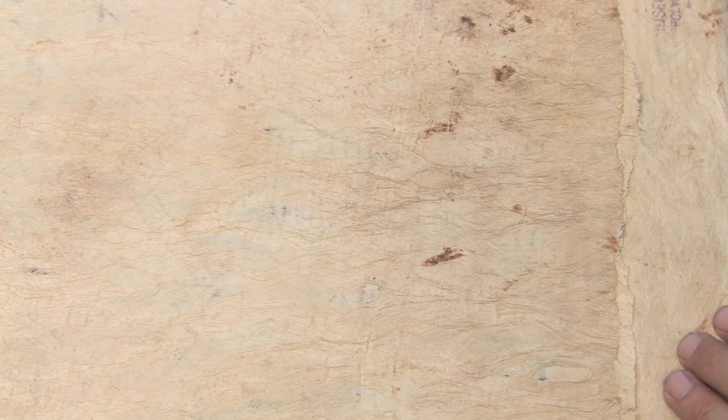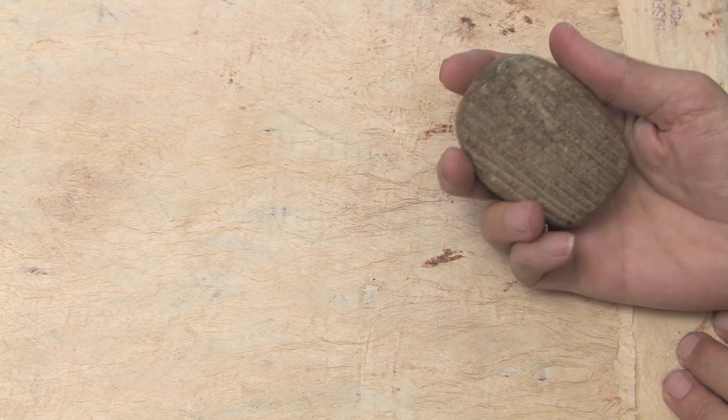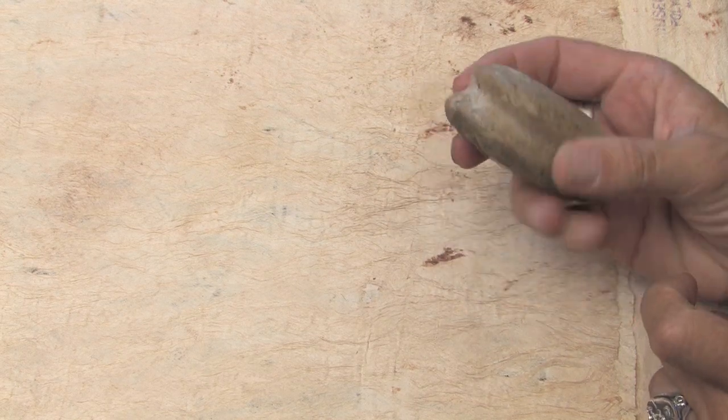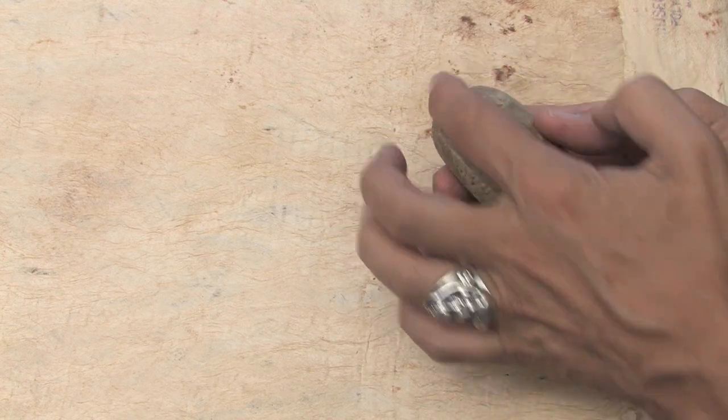The Maya had this kind of paper too, and this is the tool that the Maya used to make this paper out of the bark. It's called a bark beater. It's got a groove around the outside.